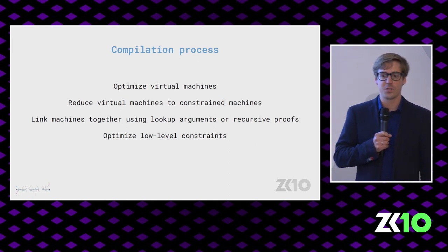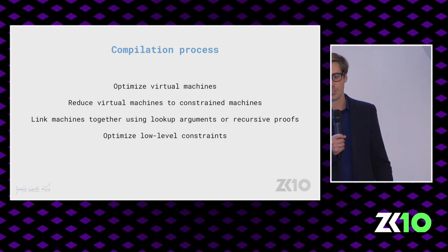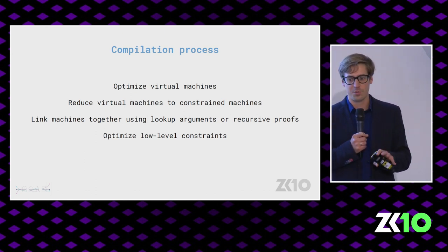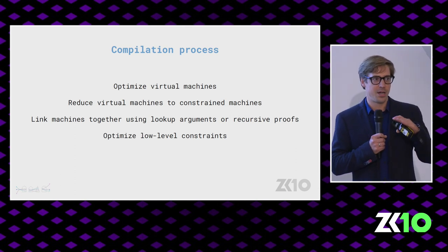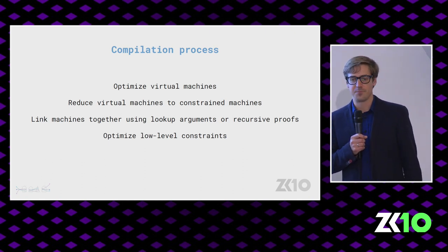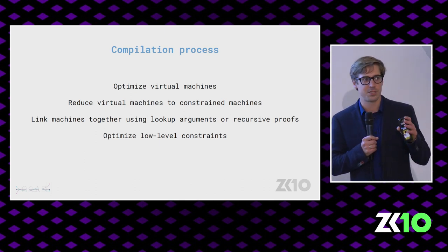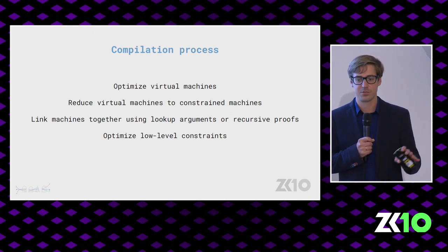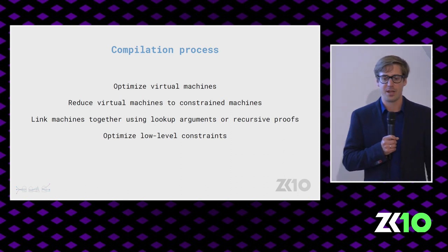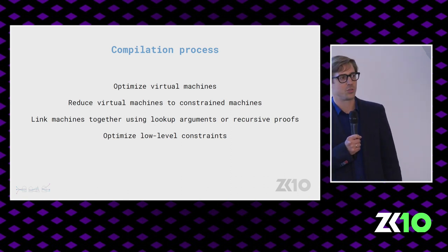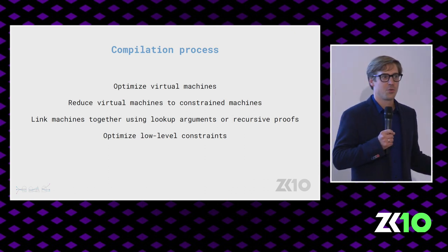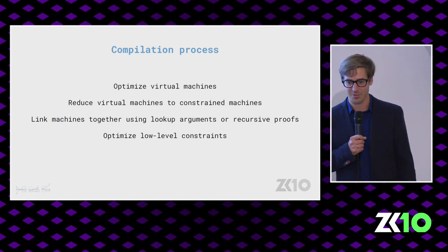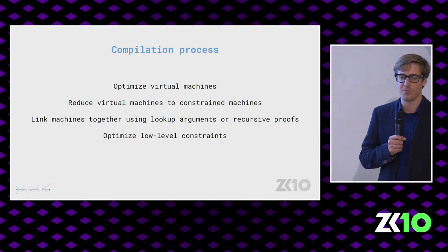The overall compilation process works by looking at all virtual machines, determining the links and connections, then running an optimizer — in certain cases combining multiple instructions into a single row. Then all virtual machines are reduced into constraint machines: assembly code is translated into Pill code, and in the end everything is a constraint machine with no registers. Link mechanisms handle connections using lookup arguments or recursive proofs, or whatever new mechanism will be developed in the future. There is also another optimization stage on the low-level constraints.